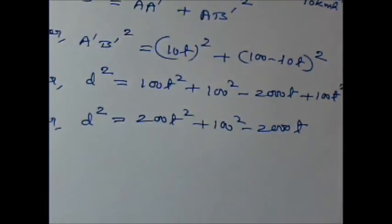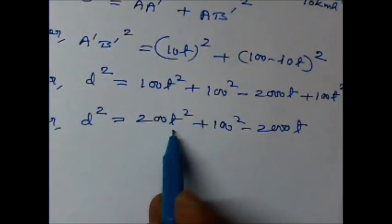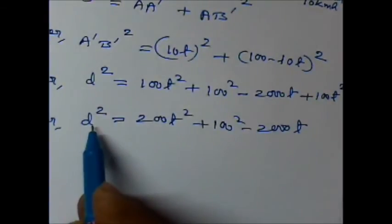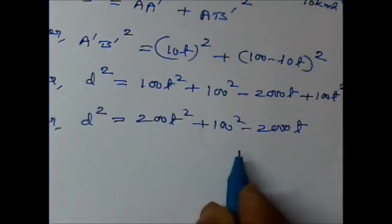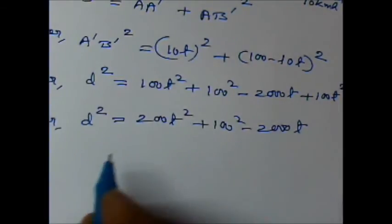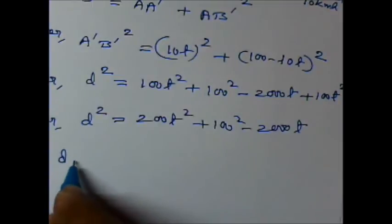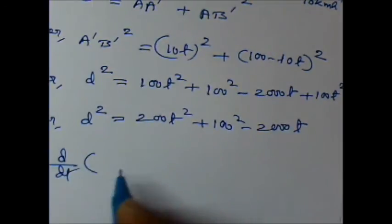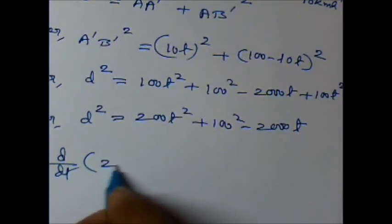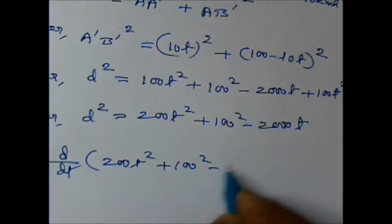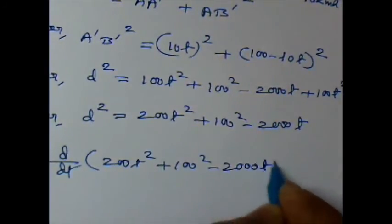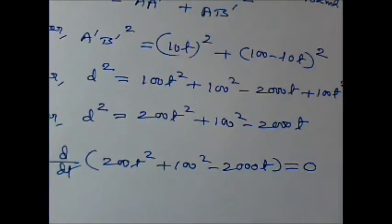Now, we want a time when D is minimum. If D is minimum, that means D squared will also be minimum. So by using differential calculus, we know that if I find d/dT of this term, for minimum value, this has to be 0.